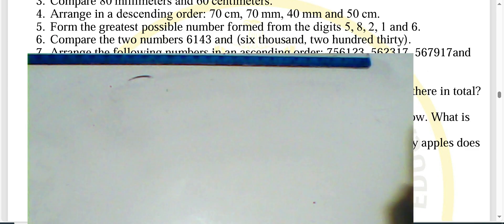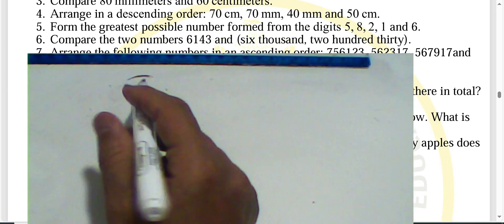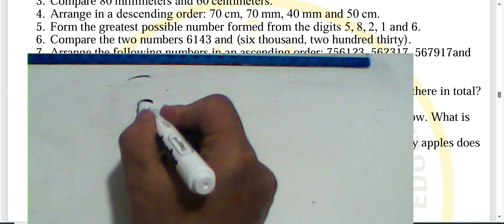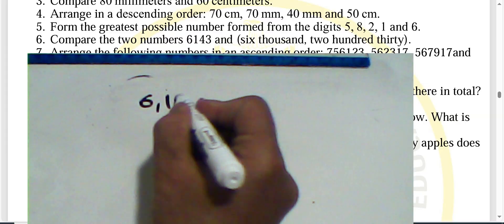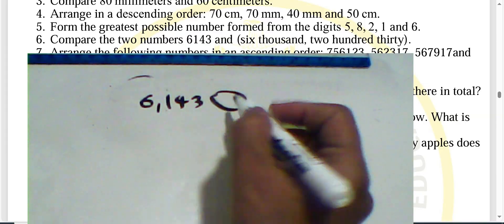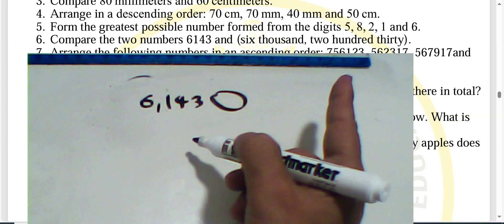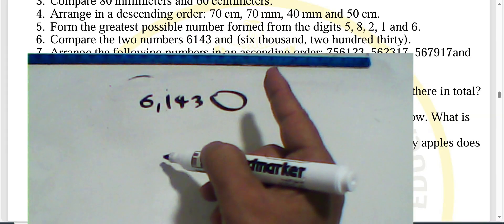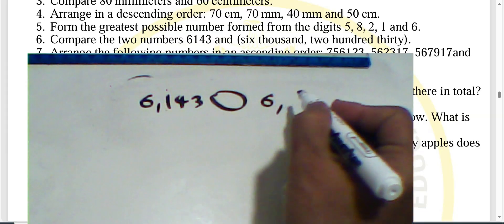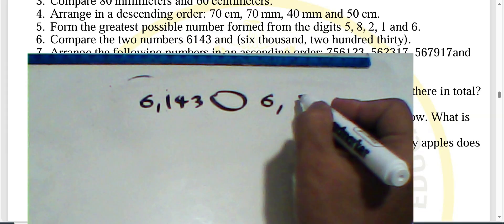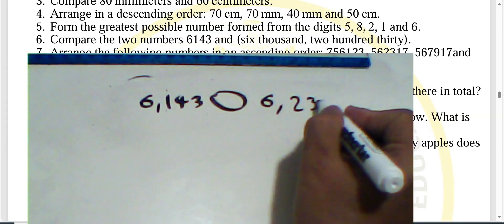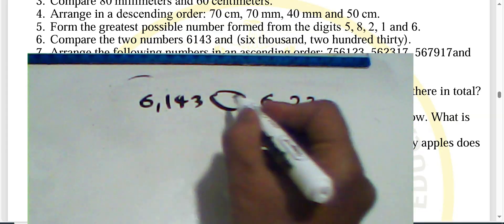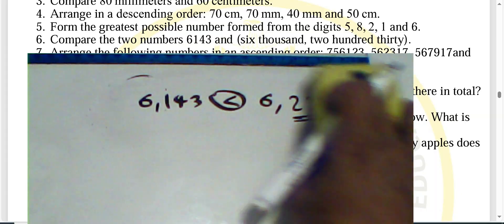Question six: compare two numbers — 6,143 and six thousand two hundred thirty. The number 6,230 is greater than 6,143, so use the greater-than sign.